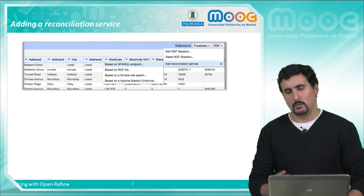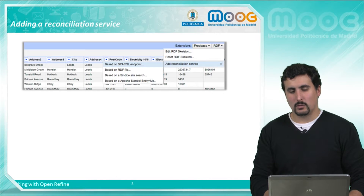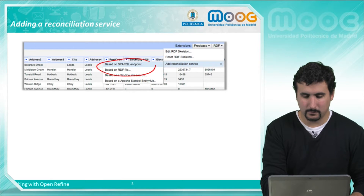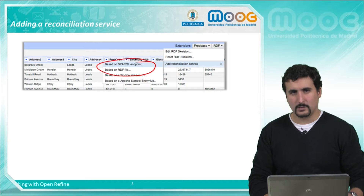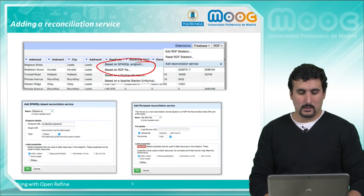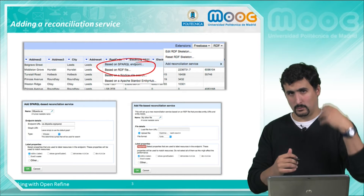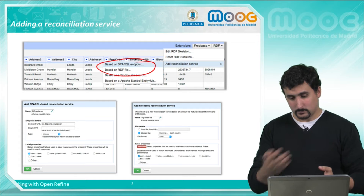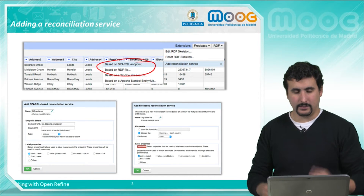In OpenRefine, using the RDF extension, the first thing we have to do is to add what is called a reconciliation service, as we see here. We will distinguish two main types: ones based on SPARQL that execute SPARQL queries against a SPARQL endpoint, and ones using a local file containing RDF triples.